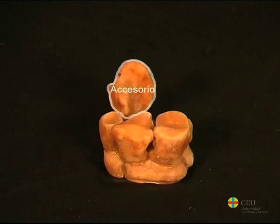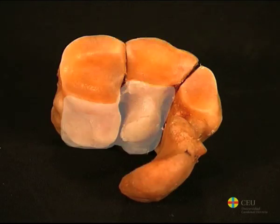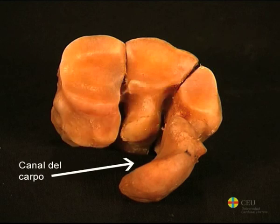Finally, the accessory, or pisiform, is located as an appendix that projects behind the carpus and forms, along with the palmar surface of the carporadial and intermediate bones, the carpal channel — a space through which tendons of the flexor muscles pass.